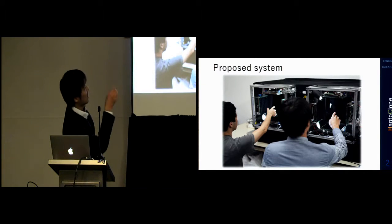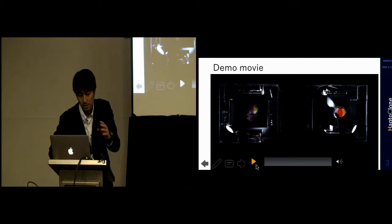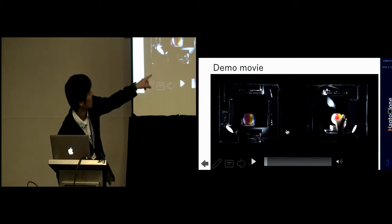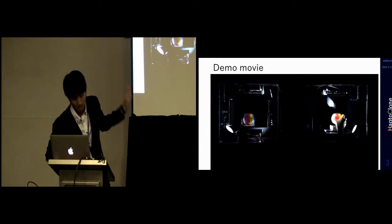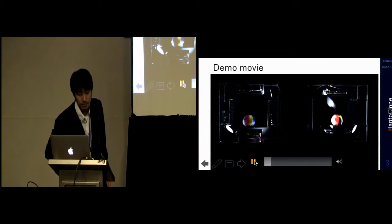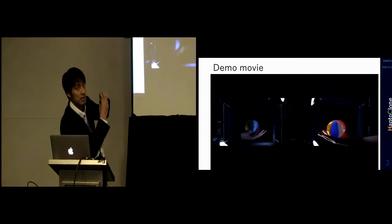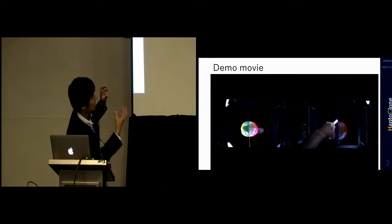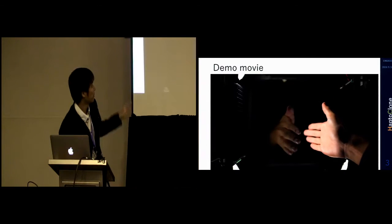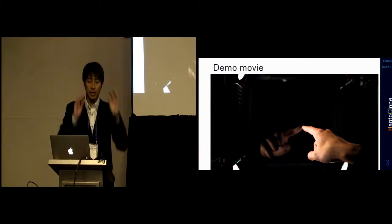He can touch his hand inside the workspace with haptic feedback. This is a demonstration movie. When you put the paperboard inside the workspace, it appears on the other side by using the optical system. By detecting the 3D depth image and calculating the intersection of the real object and the virtual object, the user can interact with the virtual object by their hand with haptic feedback. Not only objects, but you can touch the other person by your hand without wearing any glasses.